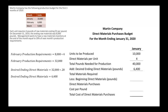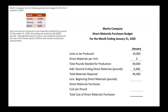Our total materials required is our total pounds needed for production plus our desired ending direct materials, giving us 46,400. Now we want to subtract out our beginning direct materials. The problem tells us we ended December with 8,000 pounds in our raw materials inventory, and that's going to be the same amount as what we started January with. So we'll plug that 8,000 in for our beginning direct materials.